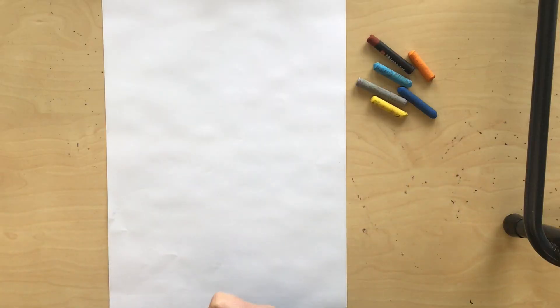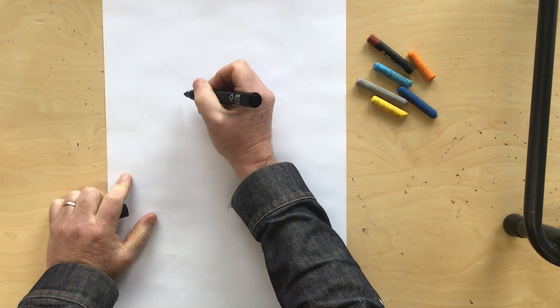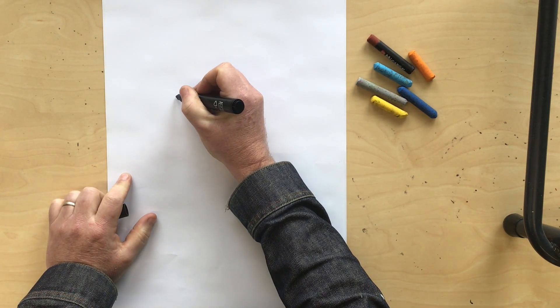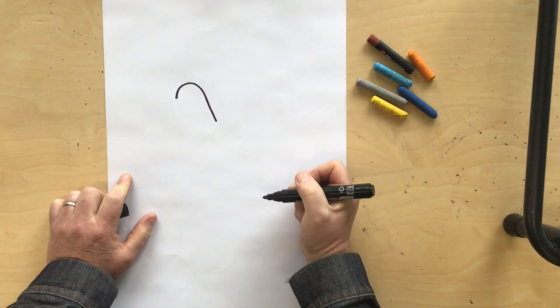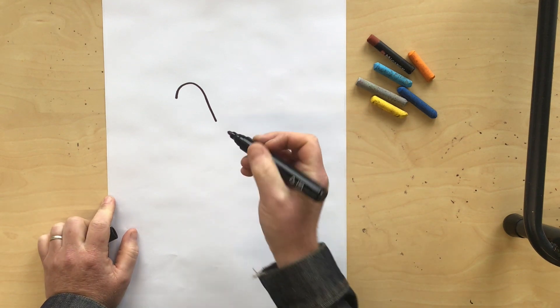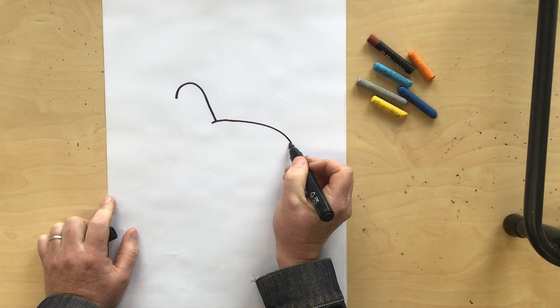Okay, to draw this seagull we're gonna start with his head, so we're just gonna draw a curving shape over from the top like this. Let's put a wing in, it's just gonna be a long pointy